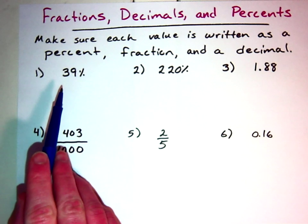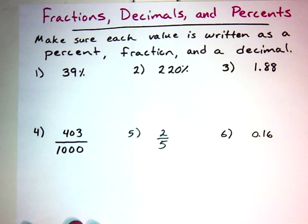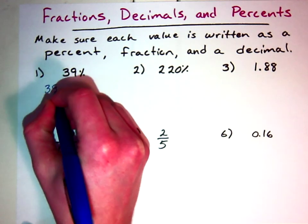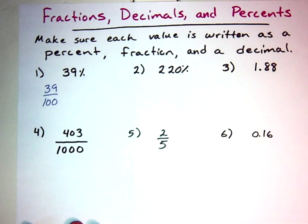For number one, it's in percentage form already. We can turn this into a fraction and a decimal. Remember, a percentage is something out of a hundred. If you have a hundred percent, you have a whole of something — like a hundred percent of a candy bar means you have the whole candy bar. So thirty-nine percent simply means thirty-nine out of one hundred. That's the fraction form, and thirty-nine over one hundred does not simplify.